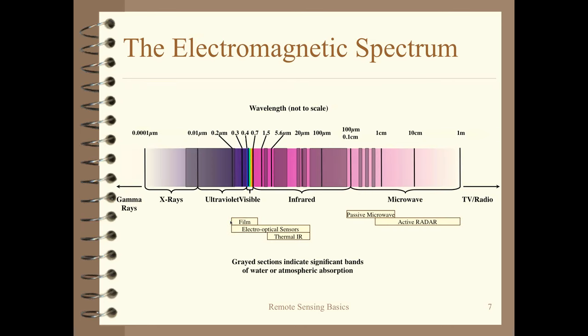Here's the same basic diagram showing film at the bottom. Historically, we had film for over 100 years — maybe almost 150 years — before digital sensors. Film tended to mimic what we could see in the visible portion of the spectrum, a little into the UV and near-infrared. But now digital sensors extend that ability into much larger portions of the electromagnetic spectrum, and that's important for us to understand.